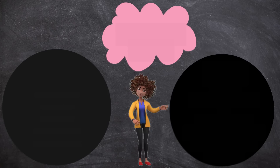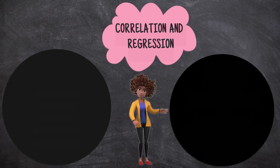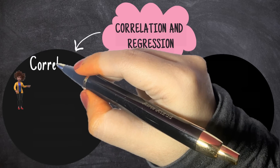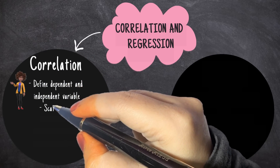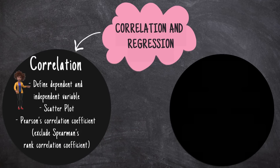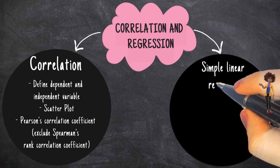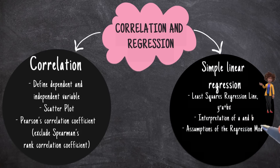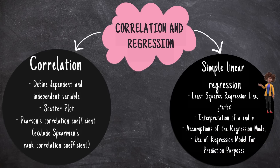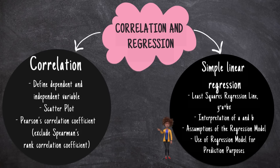In this chapter, we will cover the following topics: Correlation, defining Dependent and Independent Variables, Scatterplot, Pearson's Correlation Coefficient, Spearman's Rank Correlation Coefficient, Simple Linear Regression, Least Squares Regression Line, Y equals A plus BX, Interpretation of A and B, Assumptions of the Regression Model, and Use of Regression Model for Prediction Purposes.